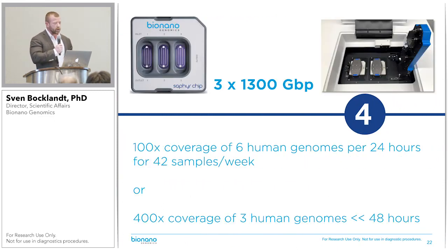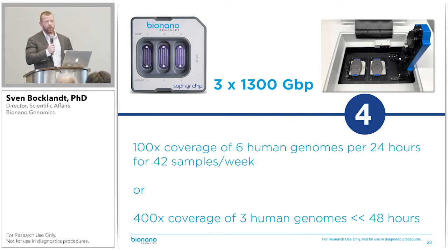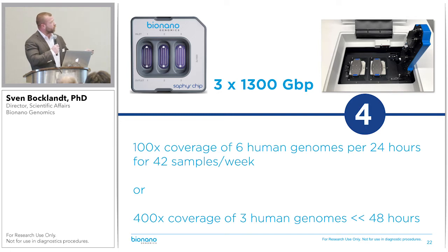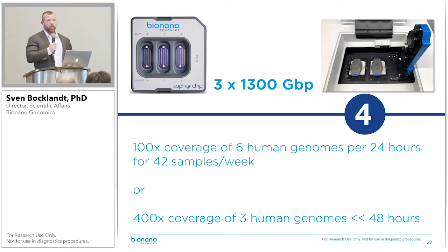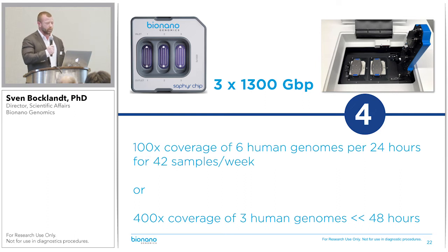That allows us to collect 3 times 1.3 terabase pairs of a human genome per run. Each of the three flow cell chips — two chips fit in an instrument — collects 1.3 terabase pairs. Our spec sets 48 hours, but in reality we see that more at 24–28 hours or so for three genomes.